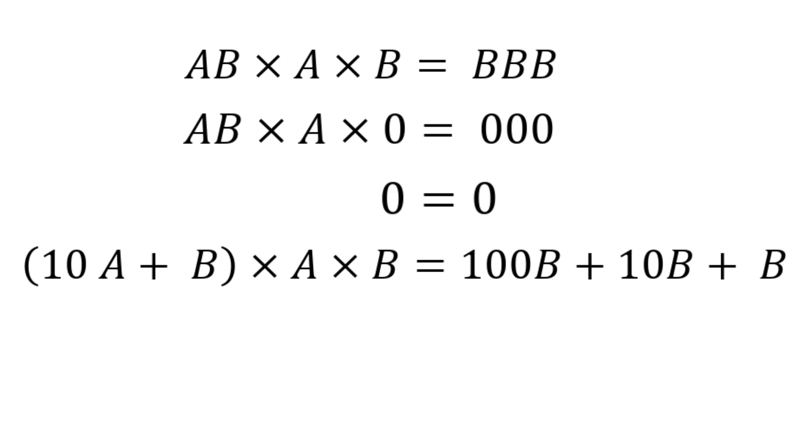We can write it as 10 times A plus B into A into B equals, and on the right-hand side we can factor out that B. After factoring it out, we have 100 plus 10 plus 1.